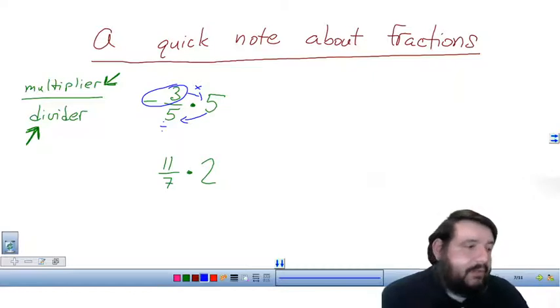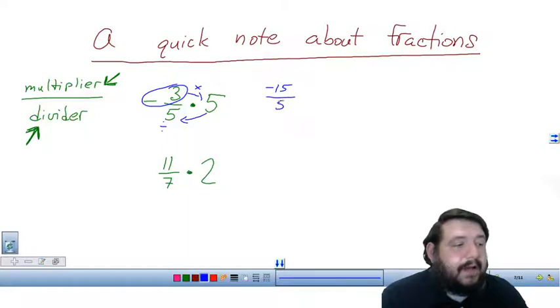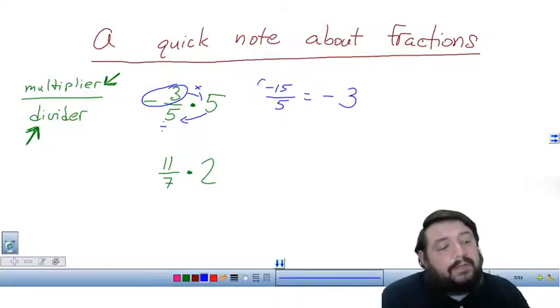Okay, so let's do that process. Negative three times five makes negative 15. And then I divide the five. So negative 15 divided by five makes negative three. Don't leave your answer as a fraction if you can simplify it.